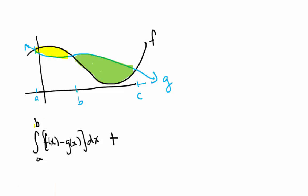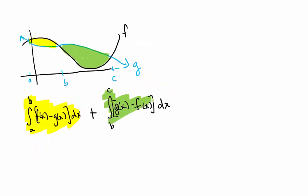And then we would have to add to that the area in green, because we want to know the whole area trapped between those two curves. B to c, g of x minus f of x dx. That's the area in green. We add the two together and we get the total area between f and g.